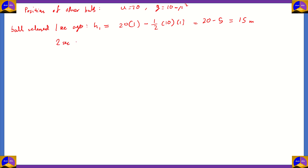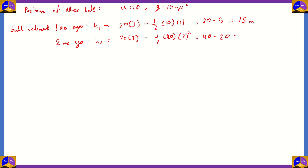For the ball released 2 seconds ago, h2 equals 20 times 2 minus half times 10 times 2 squared. That's 40 minus 20, so h2 equals 20 meters — the ball would be 20 meters above.